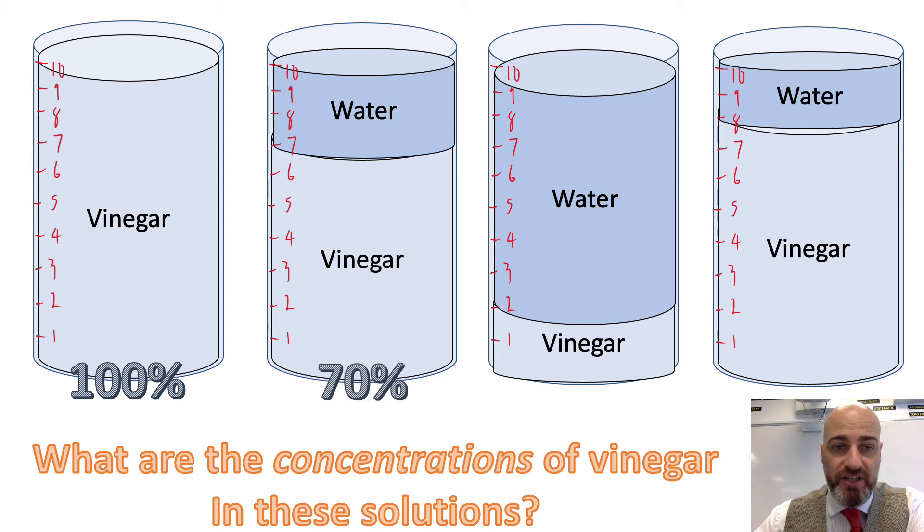Pretty straightforward, 70%, 20%, and then 80% at the end. So the concentrations are determined by the marks there.